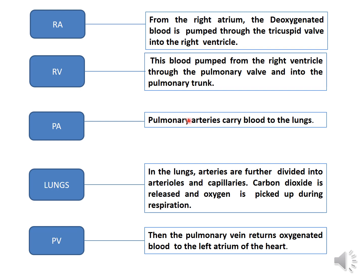The right and left pulmonary arteries carry blood to the corresponding lungs for oxygenation. In the lungs, the pulmonary artery further divides into arterioles and capillaries. In the capillaries, carbon dioxide is released and oxygen is picked up during respiration, and thus the blood becomes oxygenated. The oxygenated blood is then carried by pulmonary veins to the left atrium.